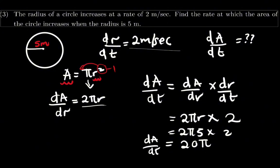dA over dt equals 20 pi. The unit is meter squared per second, because the unit of area is meter squared and the unit of time is second.